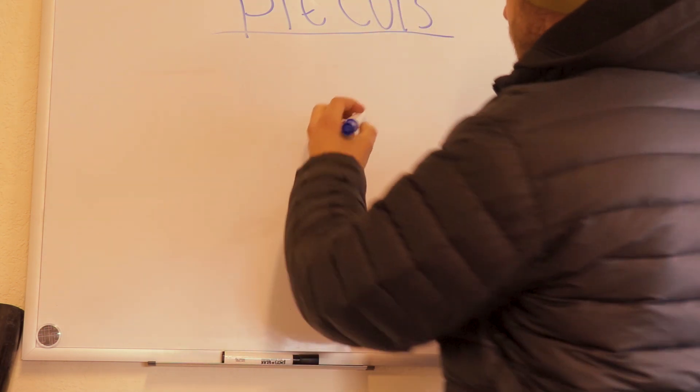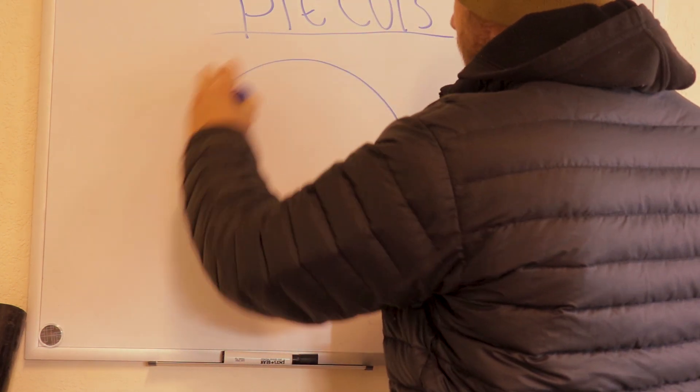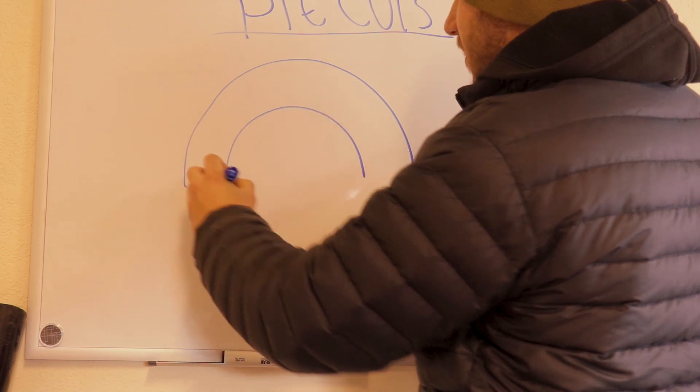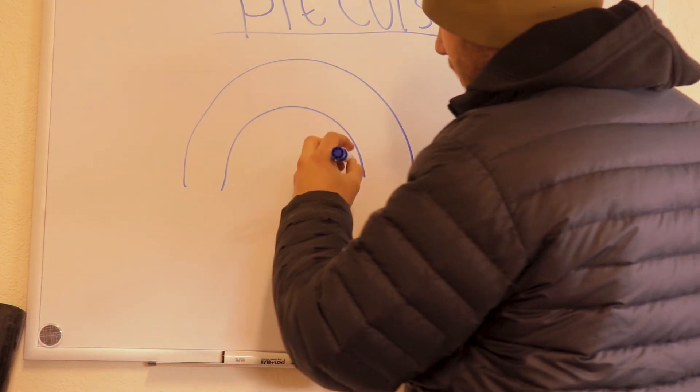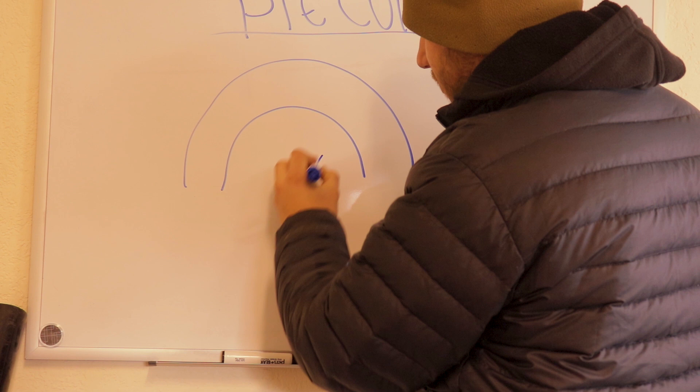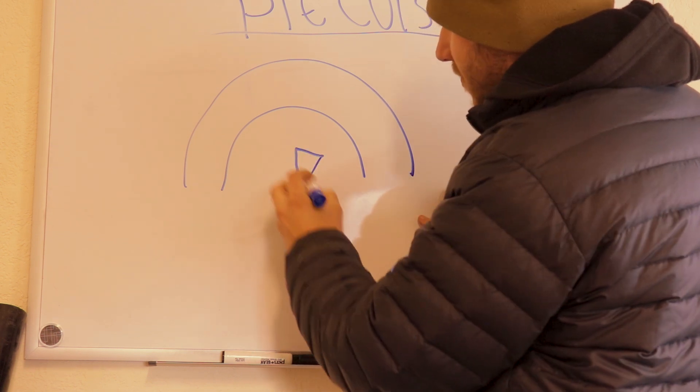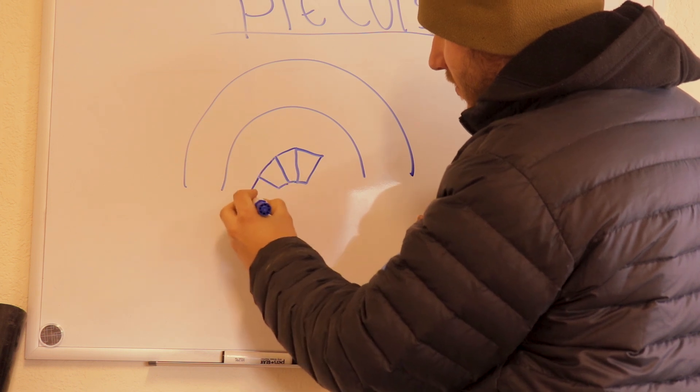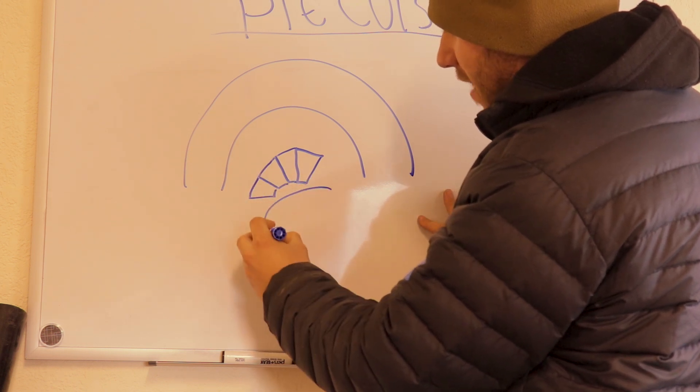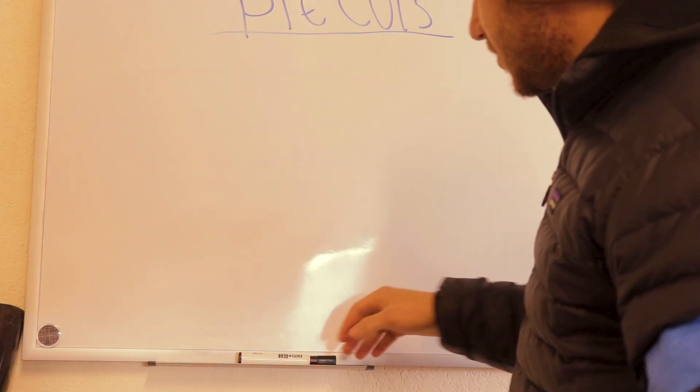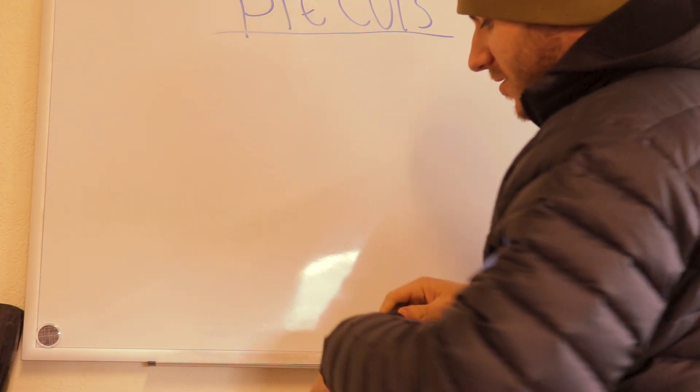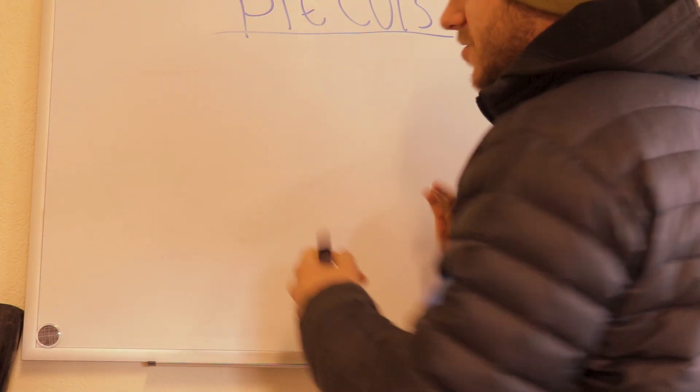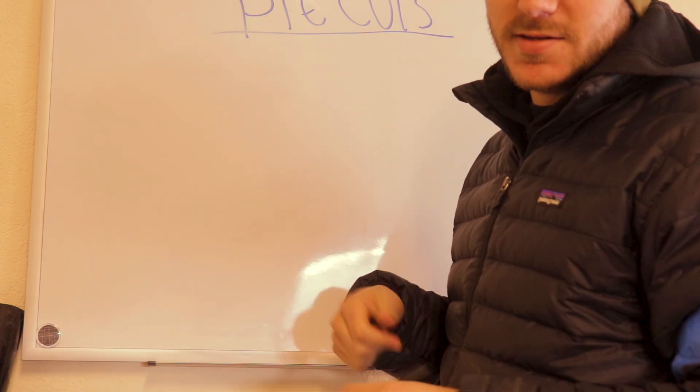Basically all it is, instead of having a mandrel-bent piece of tubing, you just cut a bunch of pie shapes out of your tubing to get the desired bend that you're going to want. So I'm just going to go over basically what you're going to be measuring and how to find that pie cut.